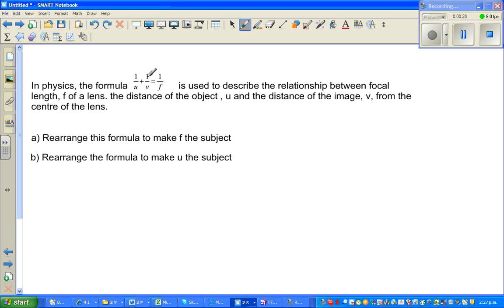The formula 1/u + 1/v = 1/f is used to describe the relationship between focal length f of a lens, the distance of the object u, and the distance of the image v. So u is the object distance, v is the image distance, and f is the focal length.